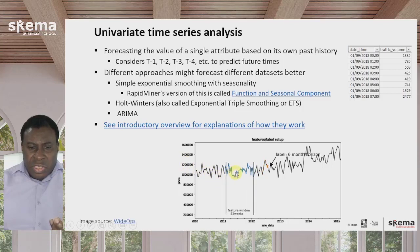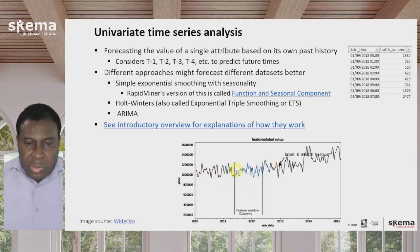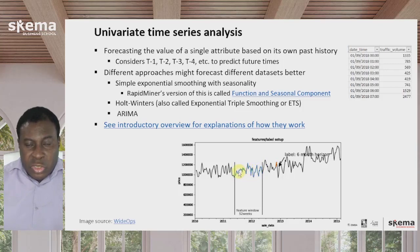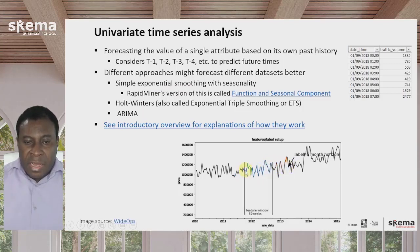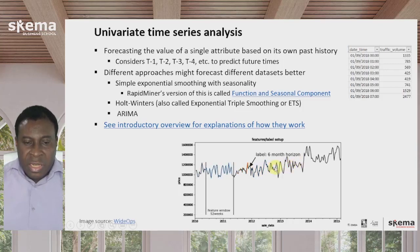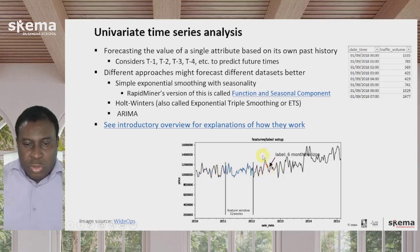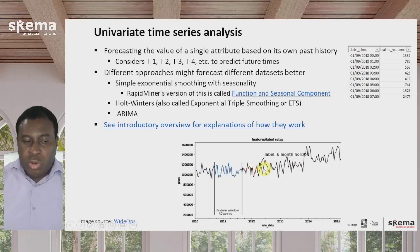Regardless, what each of the approaches is doing is represented here. There's some sort of window — a subset of the time series data being used for the analysis — whether simple exponential smoothing, Holt-Winters, or ARIMA. Based on the pattern detected in that window, an estimate sometime in the future is made. Then these estimates keep moving: when another window is selected, an estimate a certain amount of time in the future is made, then the window shifts and another estimate is made. The analysis keeps shifting the windows and making estimates, and that's generally how univariate time series analysis works.